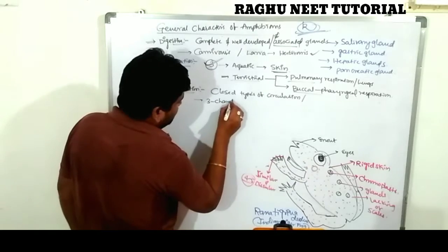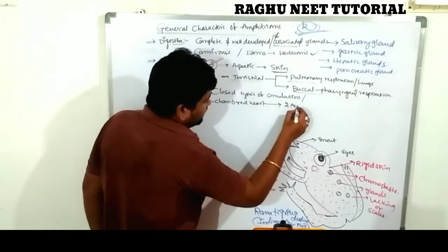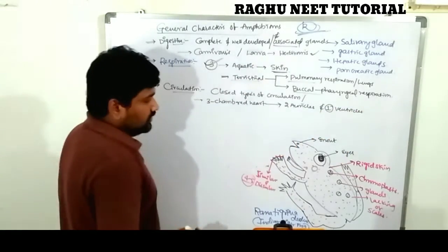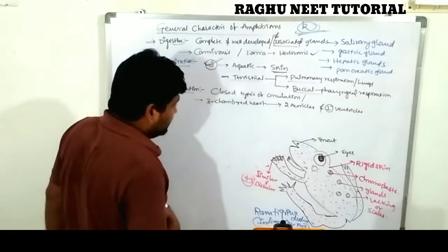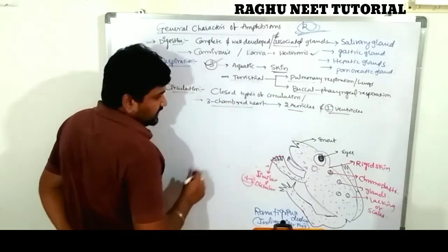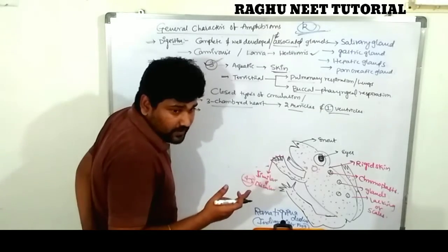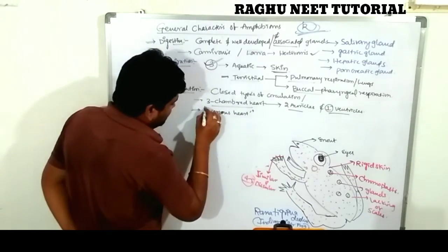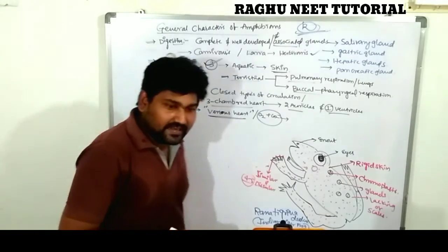Amphibians have a three-chambered heart: two auricles and one ventricle. They contain a venous heart, meaning both oxygenated and deoxygenated blood mix together — forming contaminated blood. That is why it is called a venous heart.